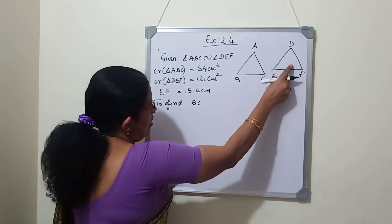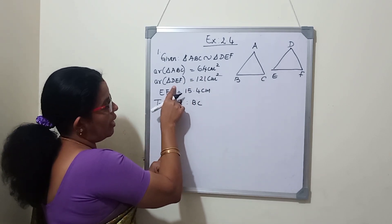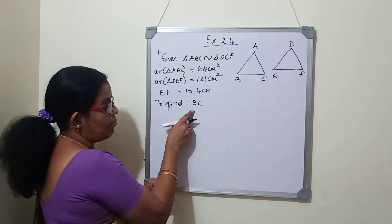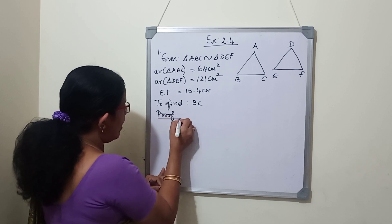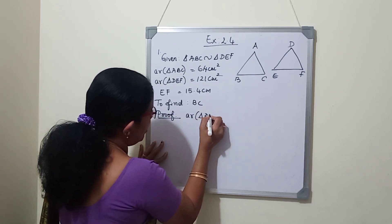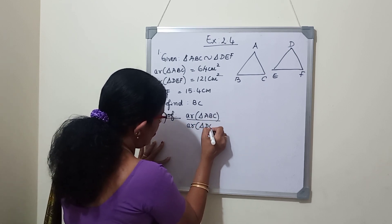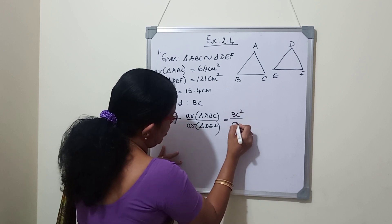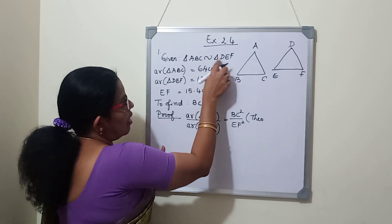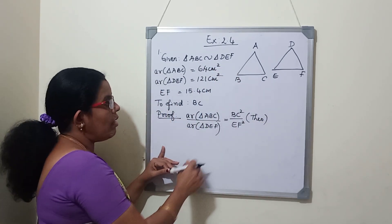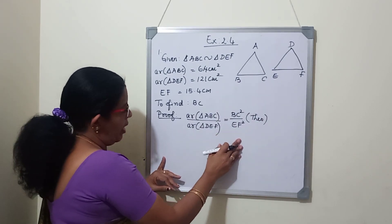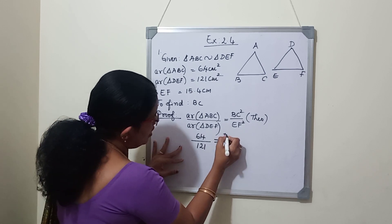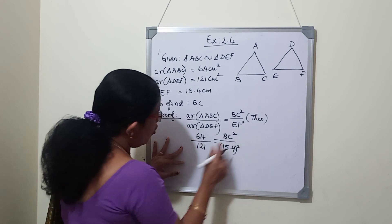Since the triangles are similar, the ratio of the areas will be equal to the square of the ratio of their corresponding sides. BC and EF are corresponding sides. EF is given; we need to find BC. We directly write: area of triangle ABC by area of triangle DEF equals BC square by EF square. Since it is already given that the triangles are similar, we don't need to prove similarity first. Area of ABC is 64 and area of DEF is 121, equals BC square by 15.4 square.